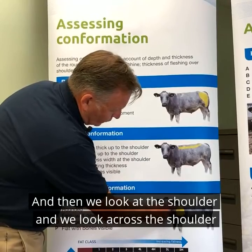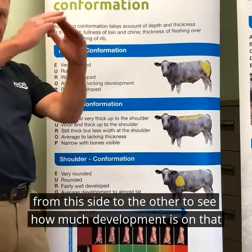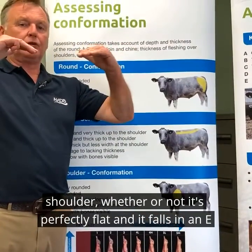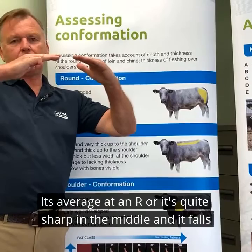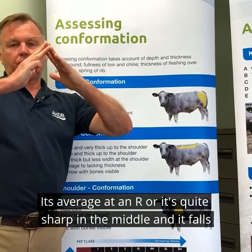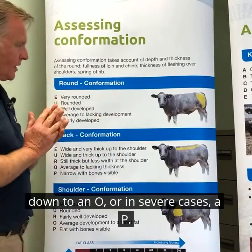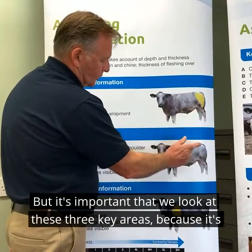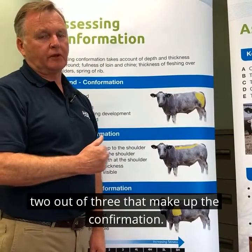Then we look at the shoulder from one side to the other to see how much development is on that shoulder — whether it's perfectly flat and falls in an E or a U for conformation, average at an R, or quite sharp in the middle falling down to an O or in severe cases a P. It's important we look at these three key areas because it's two out of three that make up the conformation.